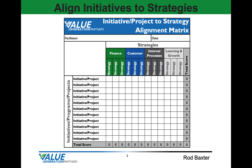This is the template we'll use to align our initiatives with our strategic goals. First, we'll list the strategic goals and objectives by category — financial, customer, internal process, and learning and growth — across the top horizontal axis.